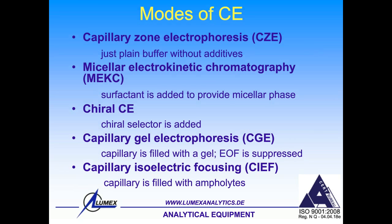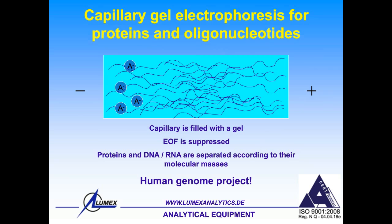The two most important modes for protein analysis are capillary gel electrophoresis, or CGE, and capillary isoelectric focusing. In capillary gel electrophoresis, the capillary is filled with a gel — not a cross-linked gel like SDS-PAGE slab gels, but a linear polymeric solution that is highly viscous. You need to apply a special high-pressure mode to fill the capillary with this gel. Electroosmotic flow is completely suppressed because the viscosity of the solution is very high.